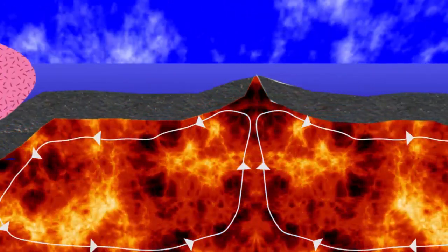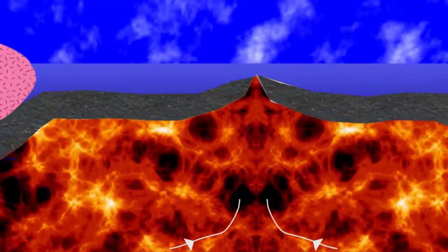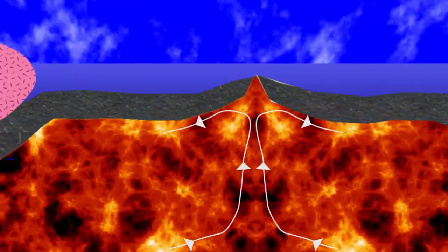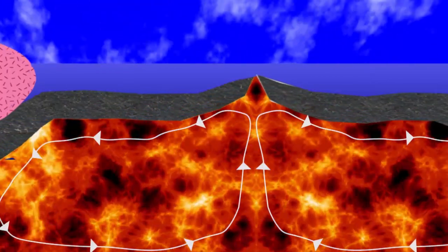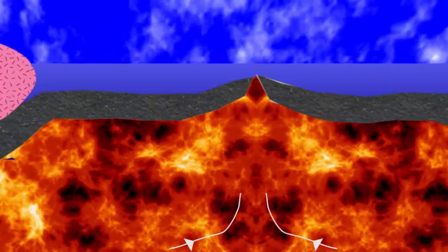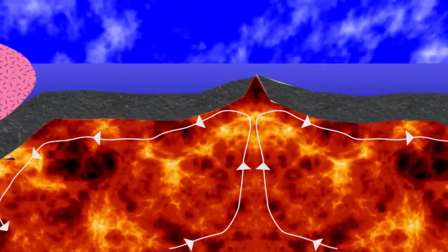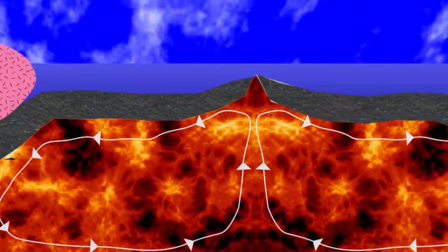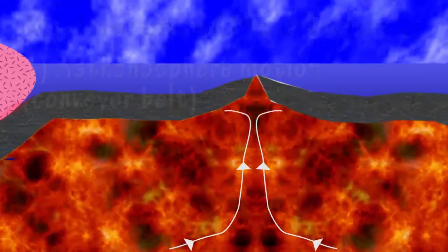This is where mid-ocean ridges form, producing the mafic magma to make basaltic injections and volcanoes in and on the crust. The divergent motion of the convection cells below the ridges is an obvious explanation for seafloor spreading.